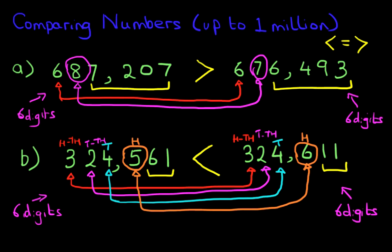The way to tell the difference in this example B was the hundreds. As for question A, it wasn't the hundreds. It was the 10,000. By the time we got to 10,000, we could tell which number was larger and which number was smaller. So, that is how we compare numbers up to 1,000,000.